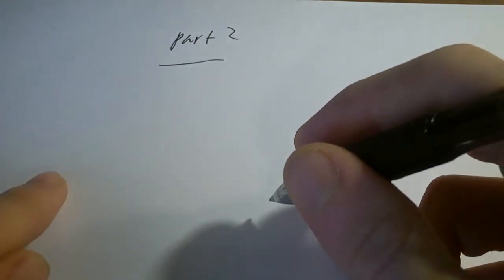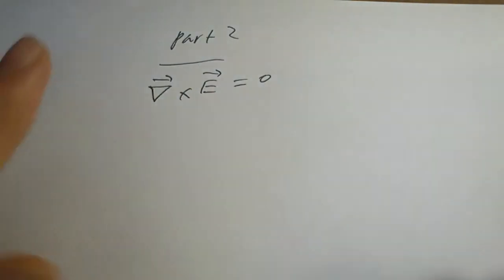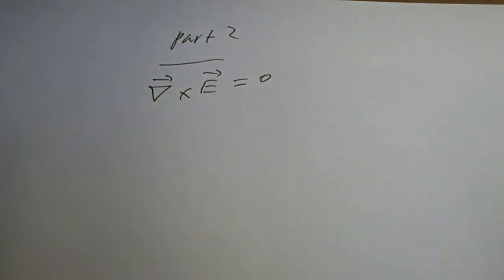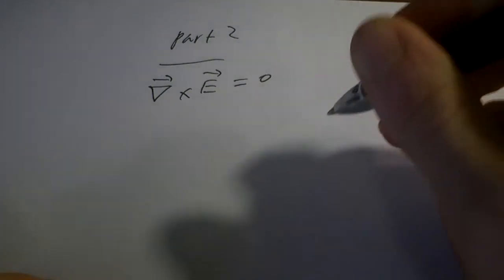So relating this to electrostatics, recall that curl of E equals zero for electrostatics. If it was electrodynamics, it wouldn't be zero — it would be minus dB/dt. Relating this to gravitational fields, you can see that this is equal to zero.